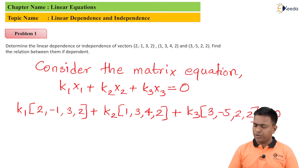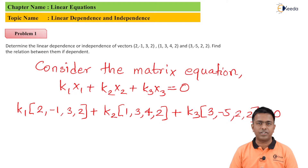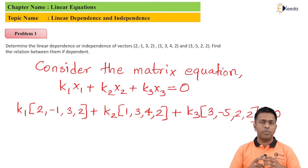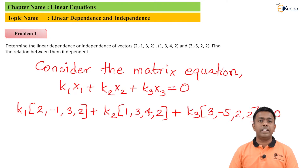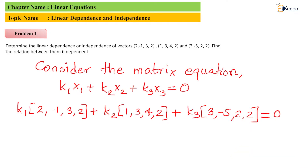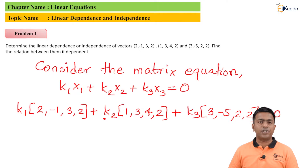We will form different linear equations, then form a matrix from those equations, find the echelon form, and determine linear dependence or independency. To form the linear equations, we take the first element of each vector and equate it with the right-hand side. The first element is 2, so we get 2k1 plus 1k2 plus 3k3 equal to 0 as our first equation.